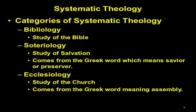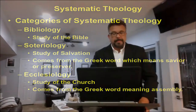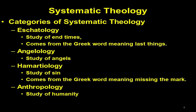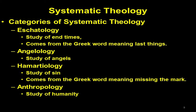Another subheading in systematic theology is bibliology, which is the study of the Bible. After that, we normally find soteriology — the study of salvation — which comes from the Greek word meaning savior or preserver. We also find ecclesiology. The ekklesia is the body of Christ, those who have been called out. So ecclesiology is the study of the church. Another category, normally found at the last part of any systematic theology book, is eschatology — the study of last things. And then we have other subheadings such as angelology, harmartiology — the study of sin — and anthropology, the biblical study and understanding of man.